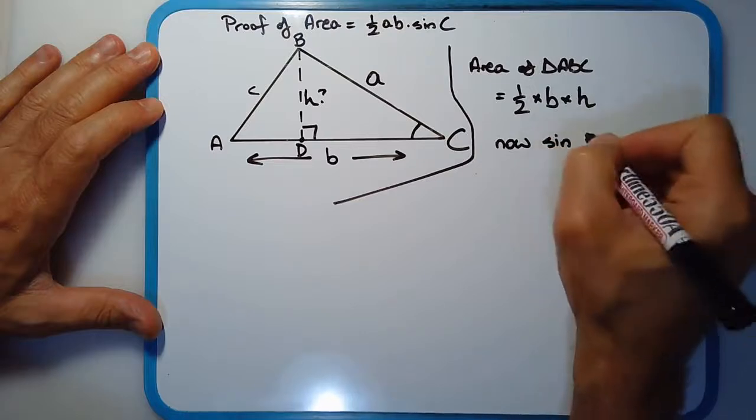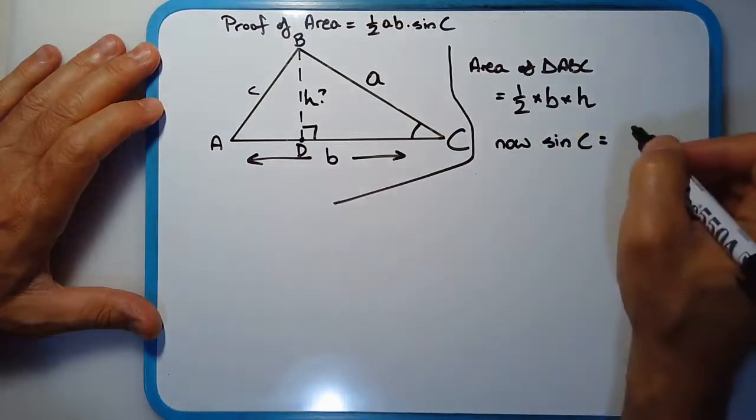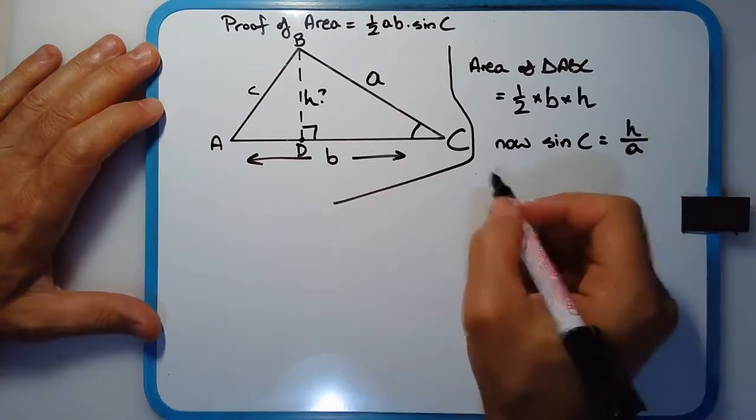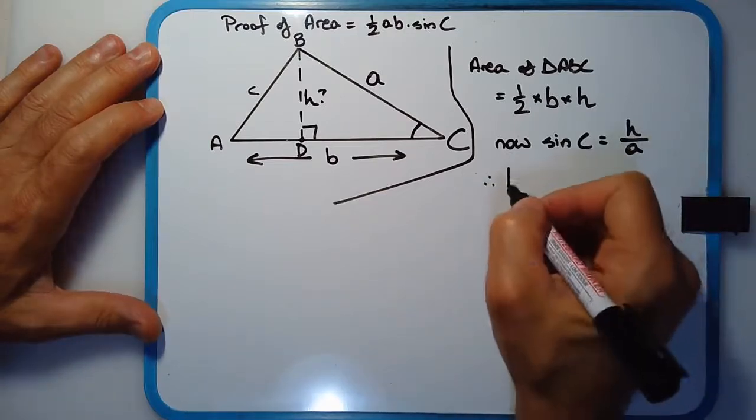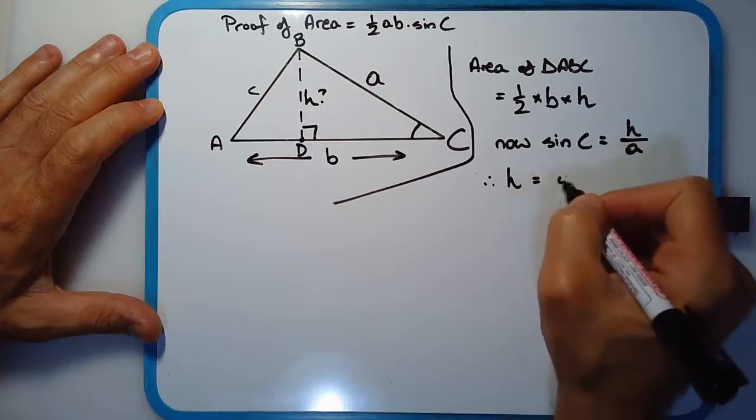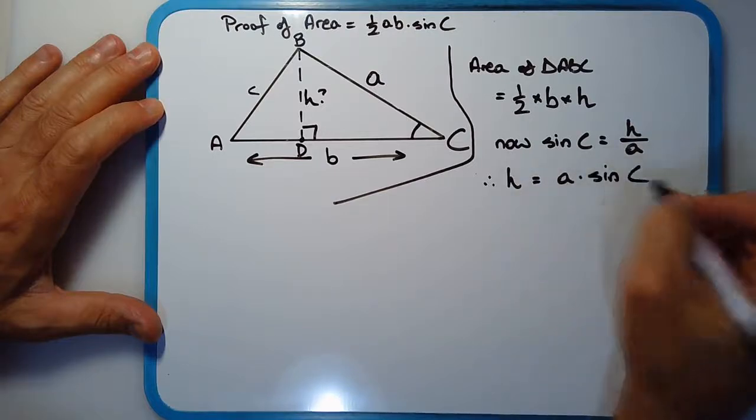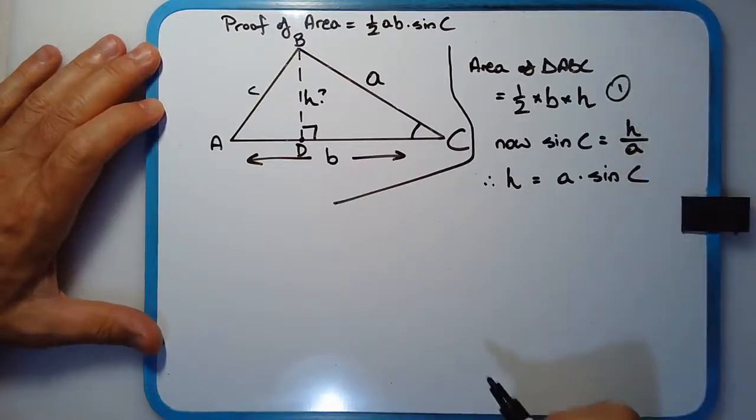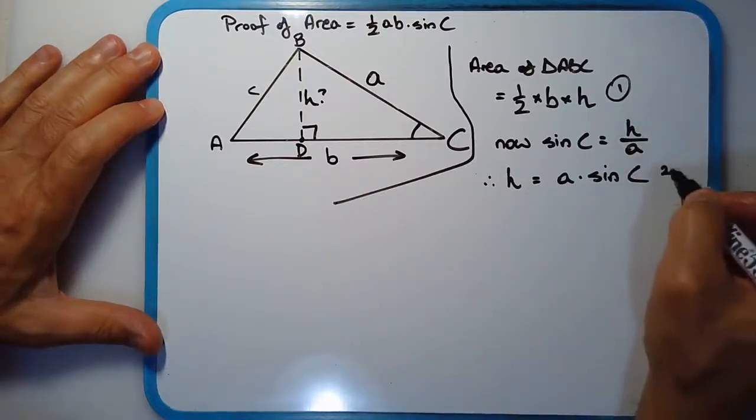Sine of C is equal to opposite over hypotenuse. So making H the subject, H is equal to A times sine of C. So I might just label this formula there. So that's number one. So that's number two.